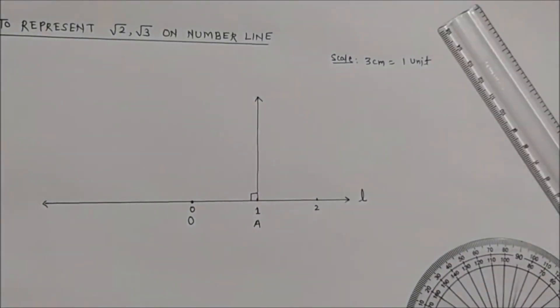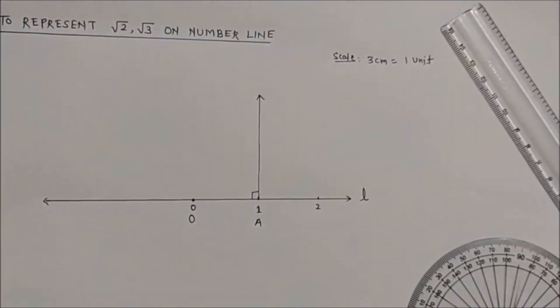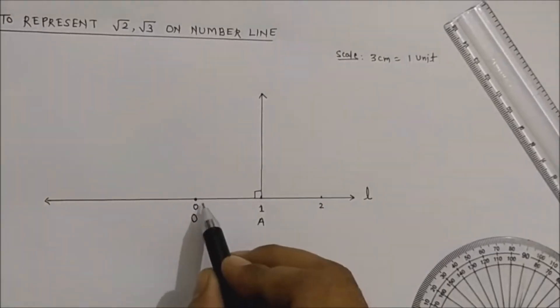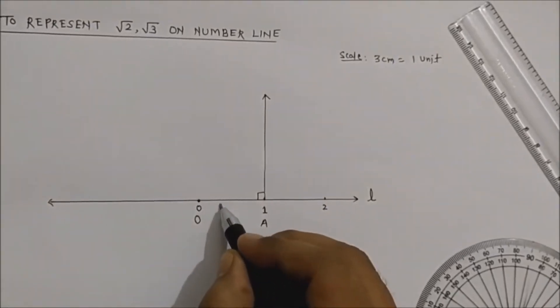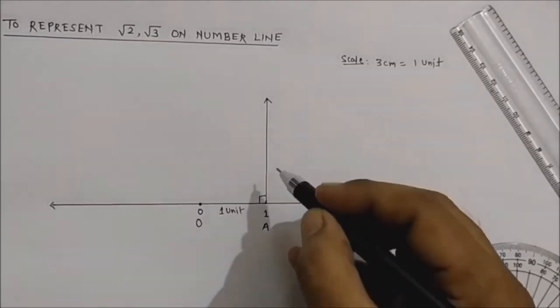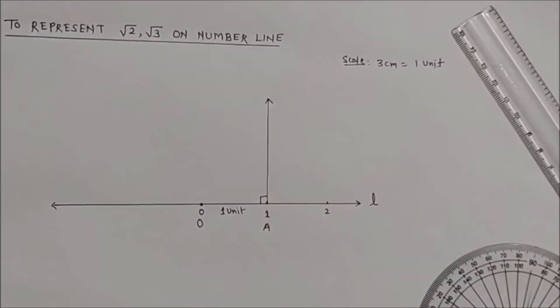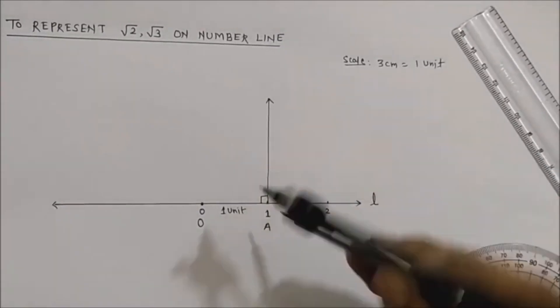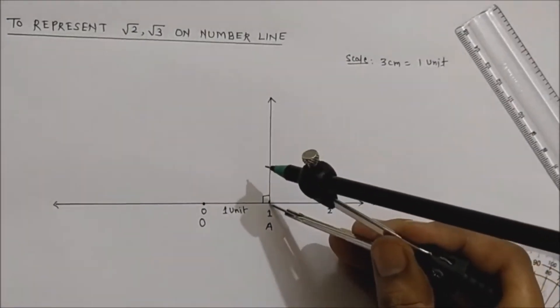Now, the same distance OA, which is 1 unit, we are going to take the same distance on this perpendicular. Take the compass on point A and take the distance of 1 unit.